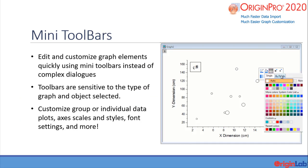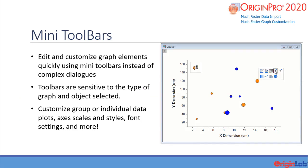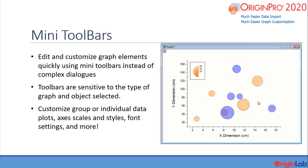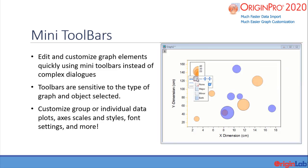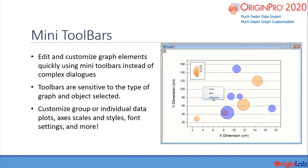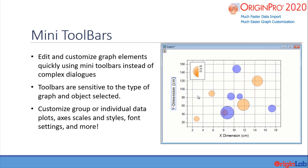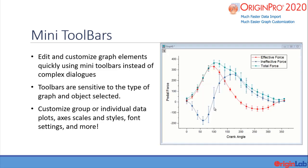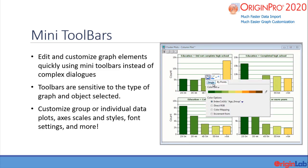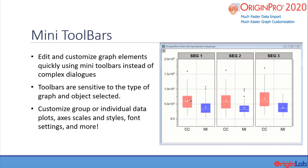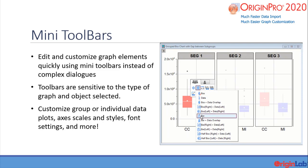Graphing in Origin has now become much easier and a lot more fun. Users can now edit and customize graph elements quickly using mini-toolbars instead of complex dialogs. Toolbars are sensitive to the type of graph and object selected. The buttons in the pop-up provide access to common customization options — customize group or individual data plots, axes, scales and styles, font settings, and more.